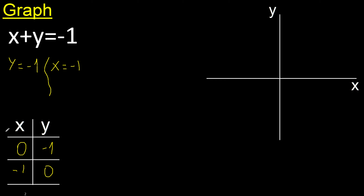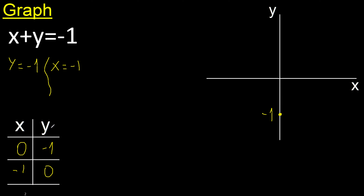x is 0, therefore in y: y is minus 1 — negative — minus 1 is here, point in y because x is 0. y is 0, therefore in x: x is minus 1 — negative — minus 1 is here, point in x because y is 0.